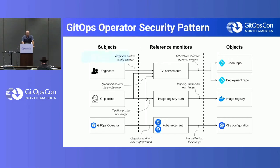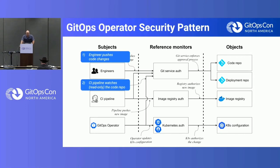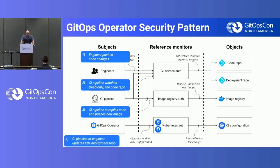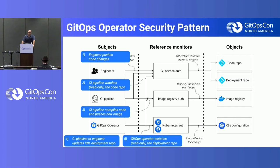Let's go through a typical process where you have an engineer pushing code changes to the code repo. You would then have a CI pipeline watching that code repo, checking out the code, running unit tests, running other kinds of scans depending on the pipeline defined, and ultimately pushing a new image to your image registry. Then you update your Kubernetes deployment repo — your GitOps repo — with the new image or other infrastructure changes you want pushed out. The operator is watching that deployment repo, and any merges to master will be applied to your Kubernetes cluster.